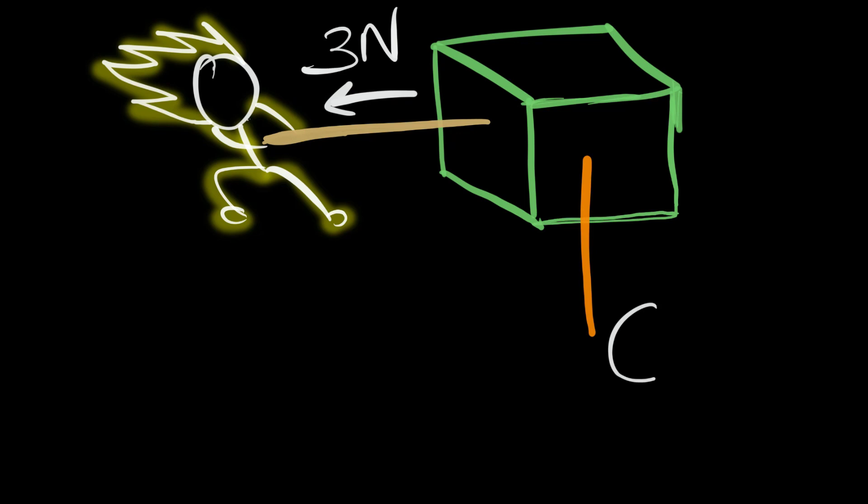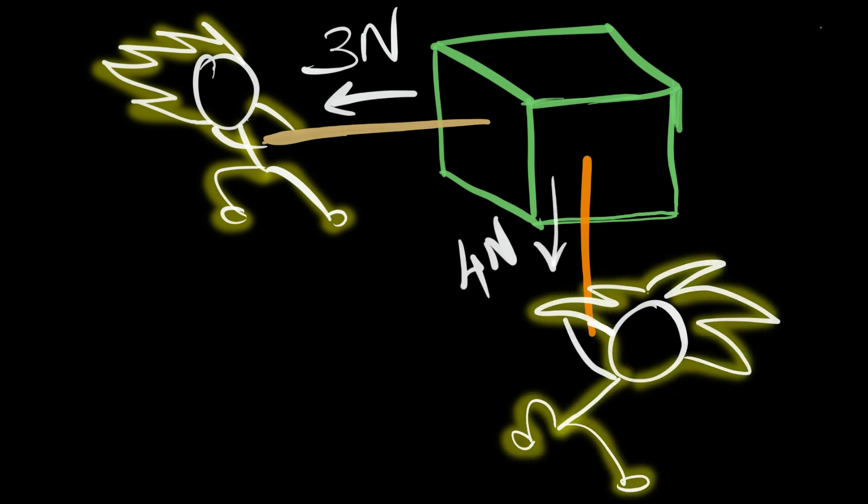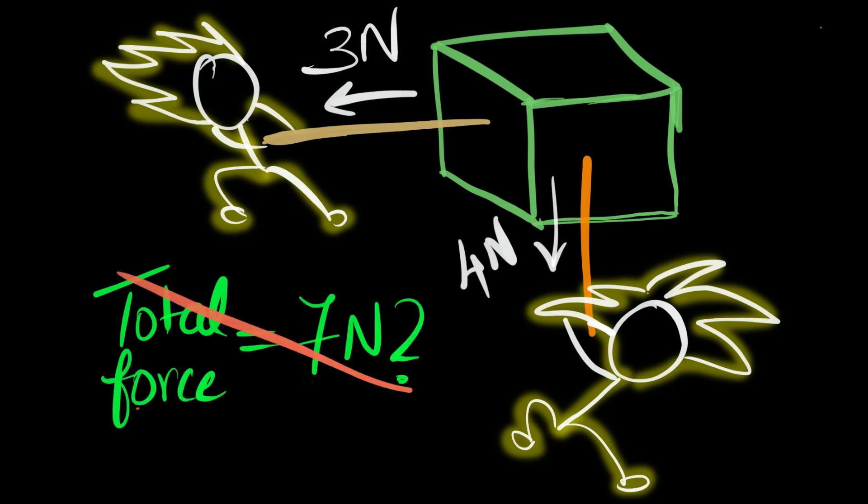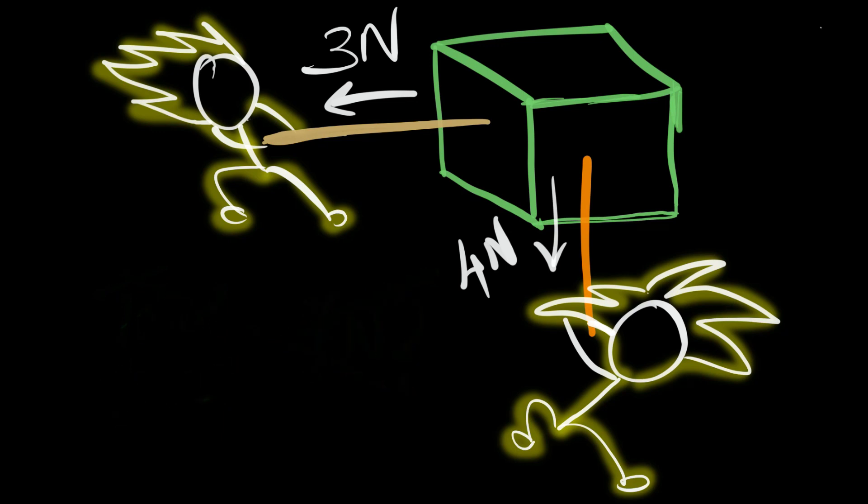Say this dude is pulling on this block with a force of three newtons and another person is pulling with a force of four newtons. Now, if I ask you, what is the total force acting on this block? What's your answer? Will it be seven? No, that's not how you add up vectors. To add up vectors, you have to follow vector addition.